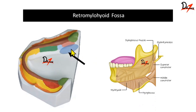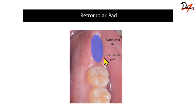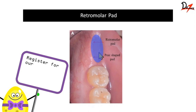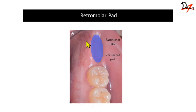It is the posterior part of the alveolingual sulcus. Now, the retromolar pad is present behind the pear-shaped pad. Many people get confused between pear-shaped pad and retromolar pad — they are different. Distal to the tooth is the pear-shaped pad, and behind the pear-shaped pad is the retromolar pad. It is a collection of loose connective tissue with mucus glands, and it is a non-keratinized pad of tissue. The denture should extend two-thirds over the retromolar pad — it should cover only two-thirds, not the full retromolar pad.